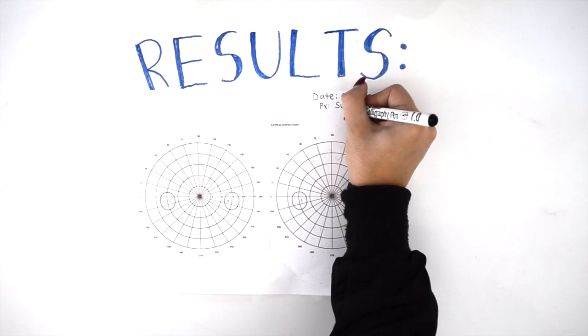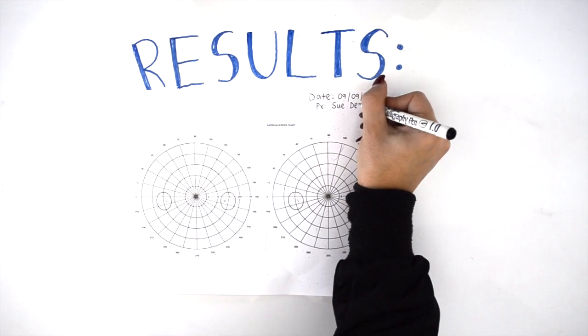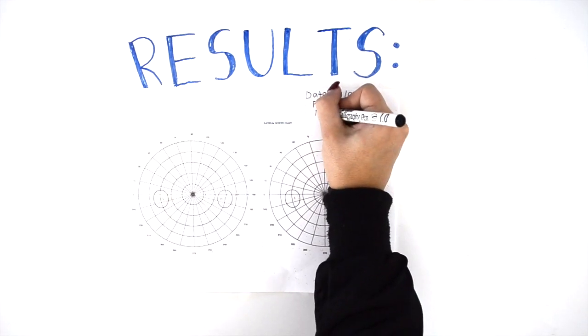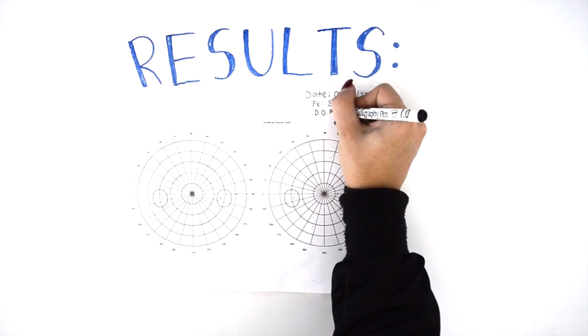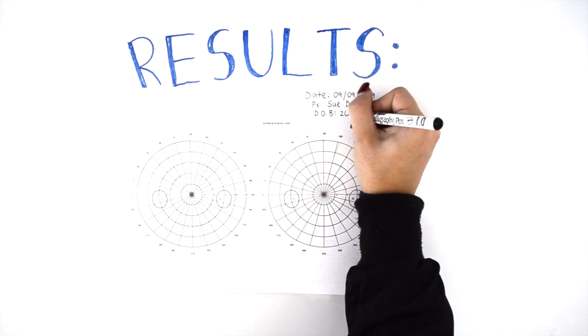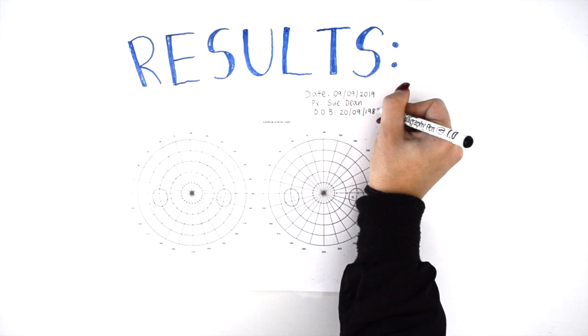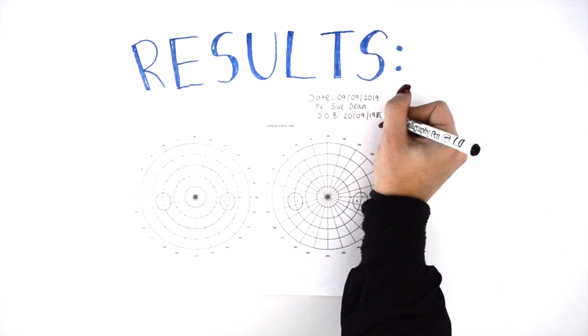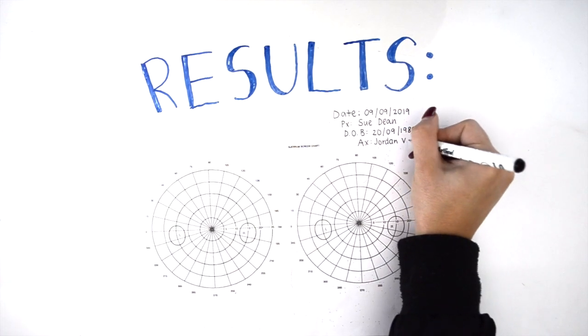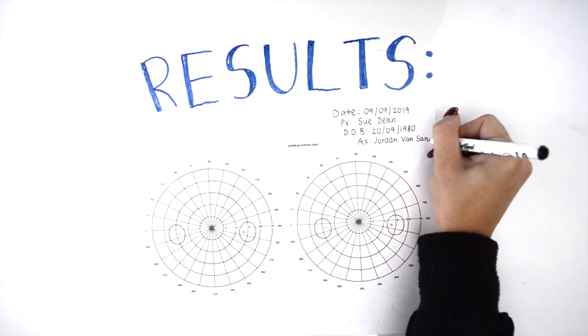Then we write down the patient's details, their full name and date of birth to indicate whose visual field the results correlate to. Patients can also be denoted as PX. We also include the assessor's full name so that we know who is liable for the testing results, which can be denoted as AX.